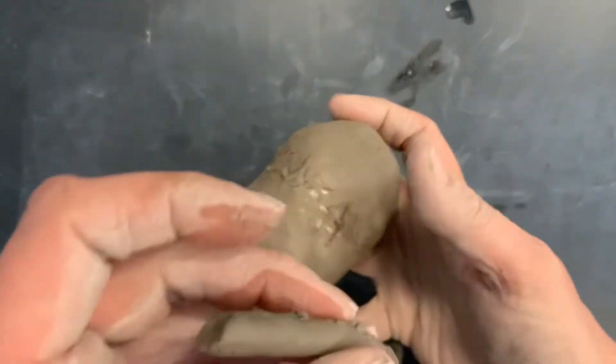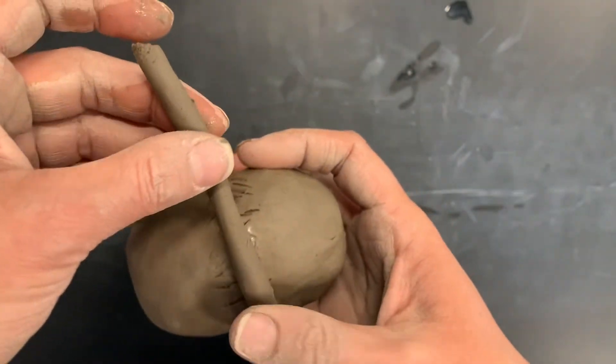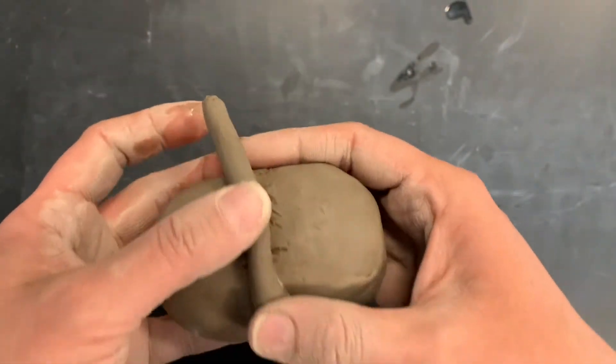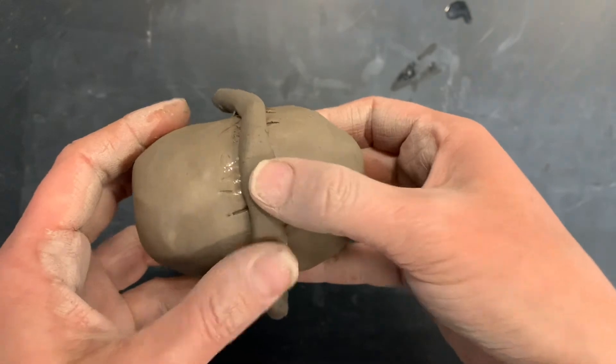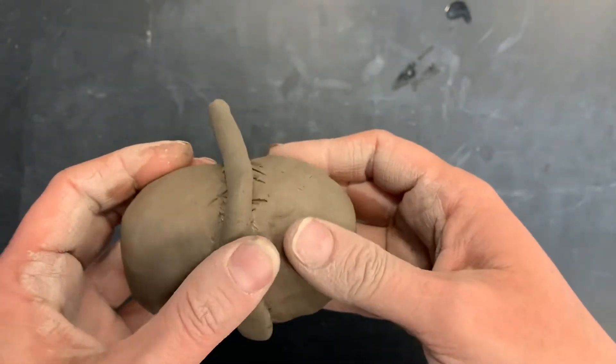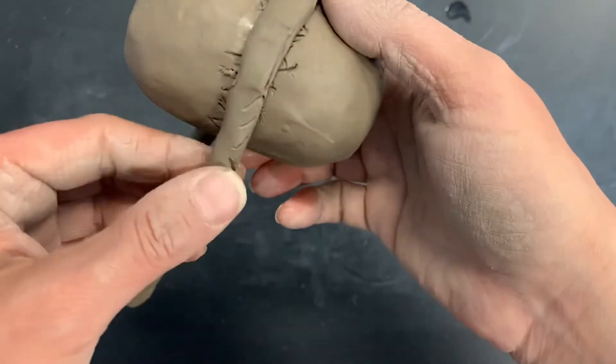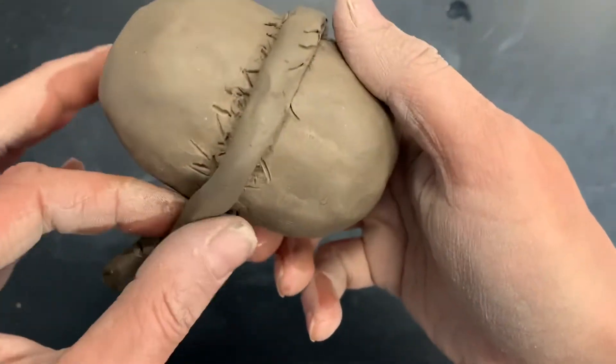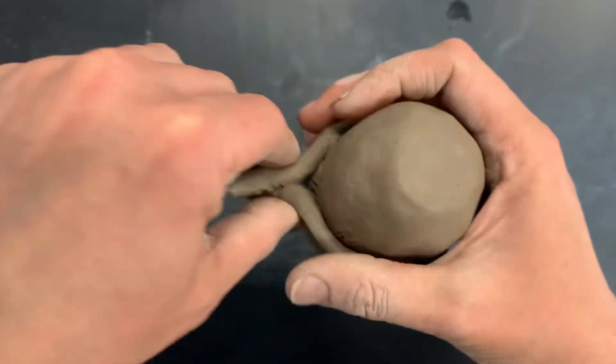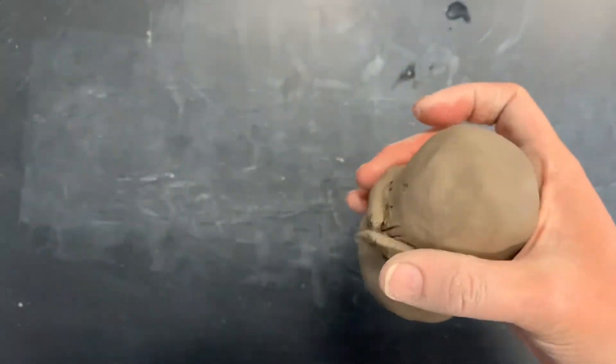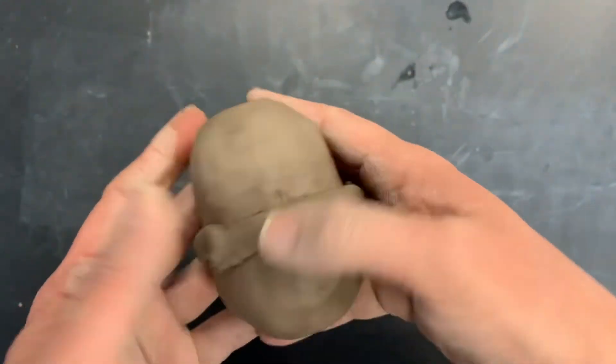We're going to make sure that the score marks are facing one another. I like to kind of press down the middle of the coil first, and then work my way to the end. I'm probably going to have some extra that I don't need, so the little excess I can just kind of pinch off and put off to the side in my scrap clay pile.